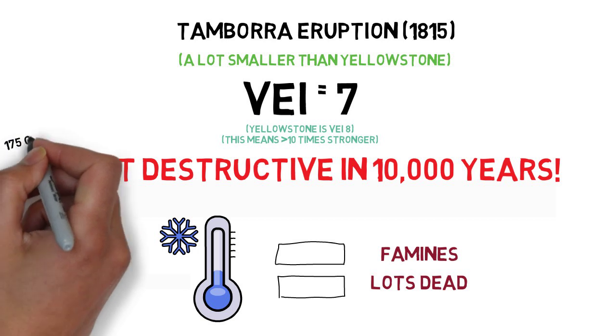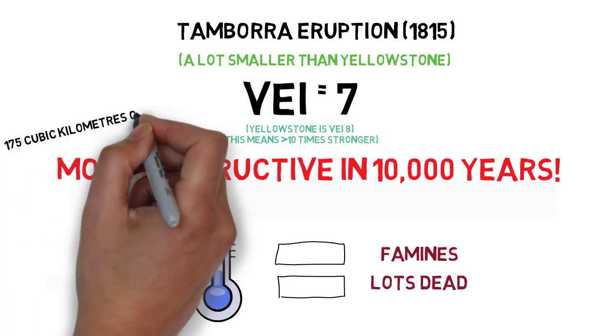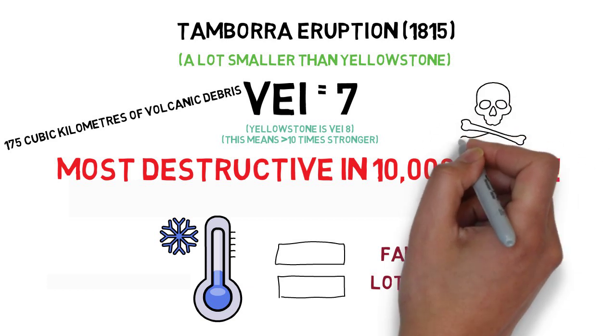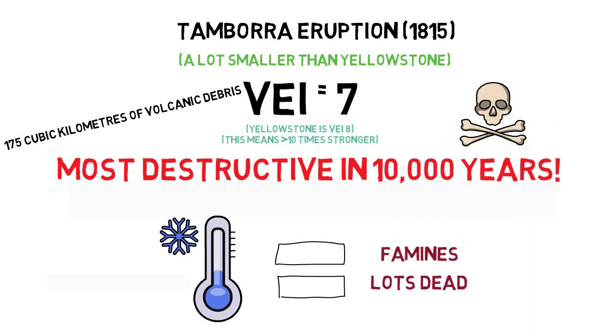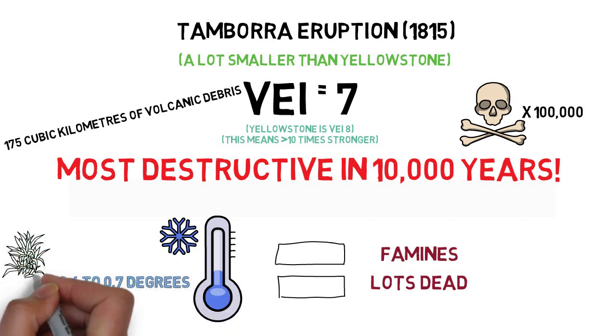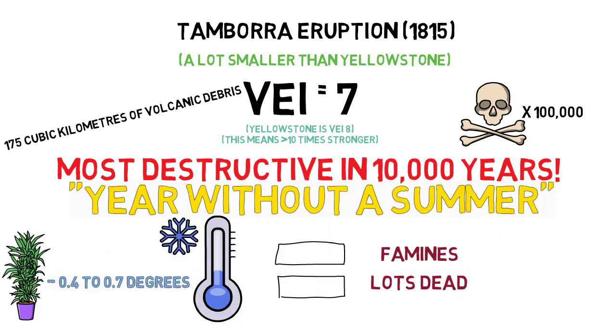This volcano produced 175 cubic kilometers of volcanic debris and directly and indirectly caused the death of up to 100,000 people. As well as this, the volcano lowered the global temperature by 0.4 to 0.7 degrees, enough to cause havoc for crops around the globe. This volcano was so devastating, the year following the eruption became known as the year without a summer.